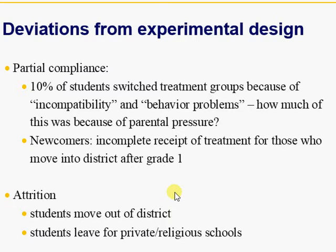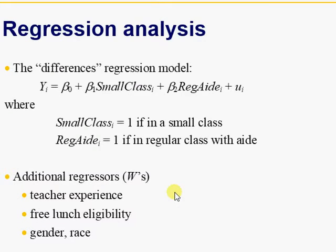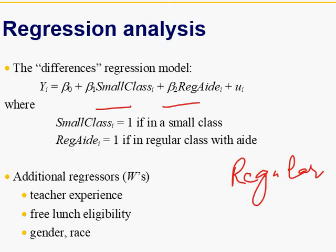We have three class sizes, so we have introduced two dummy variables: small class size and regular with aide. The regular class size is the reference category. Beta 1 is basically an improvement compared to regular class, and regular with aide is an improvement with reference to regular. There can be additional regressors such as teacher experience, free lunch eligibility, gender, and race.